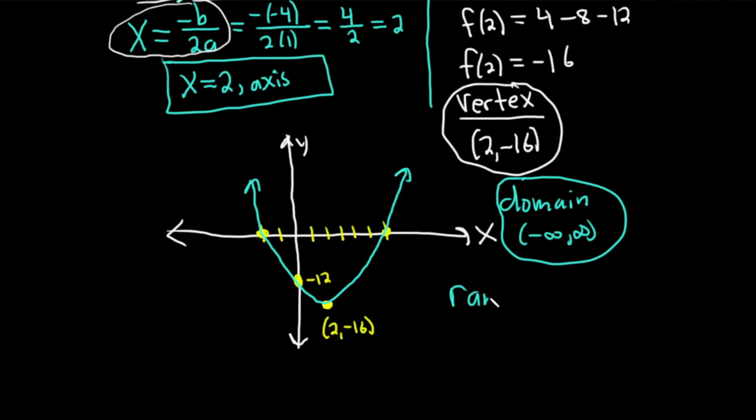Your range is going to be, well, the smallest possible y value is -16. And you want to include it. So use a bracket and it goes all the way to infinity.